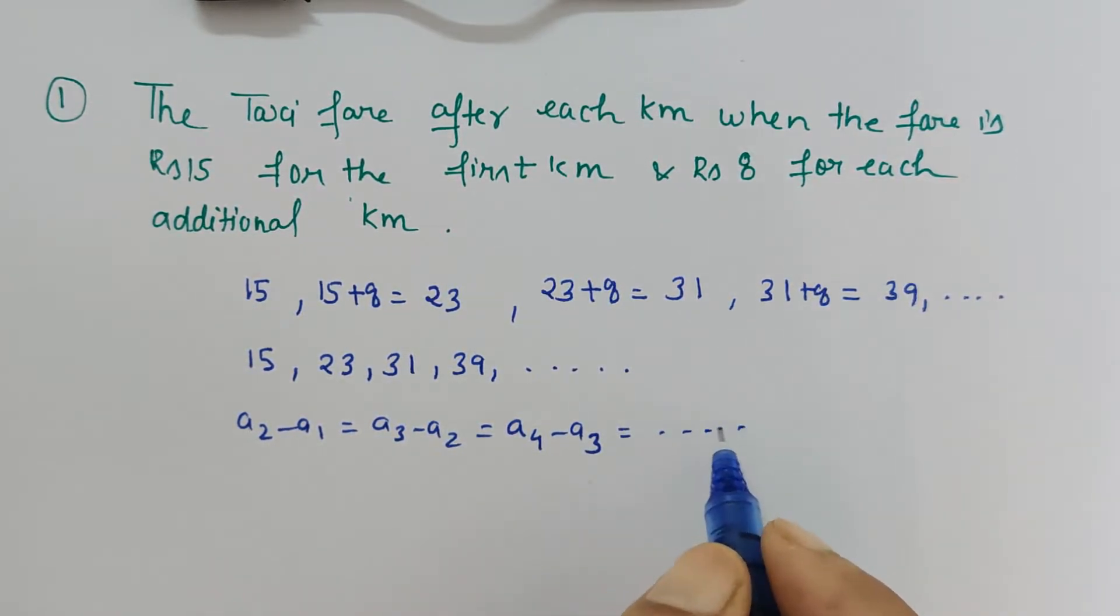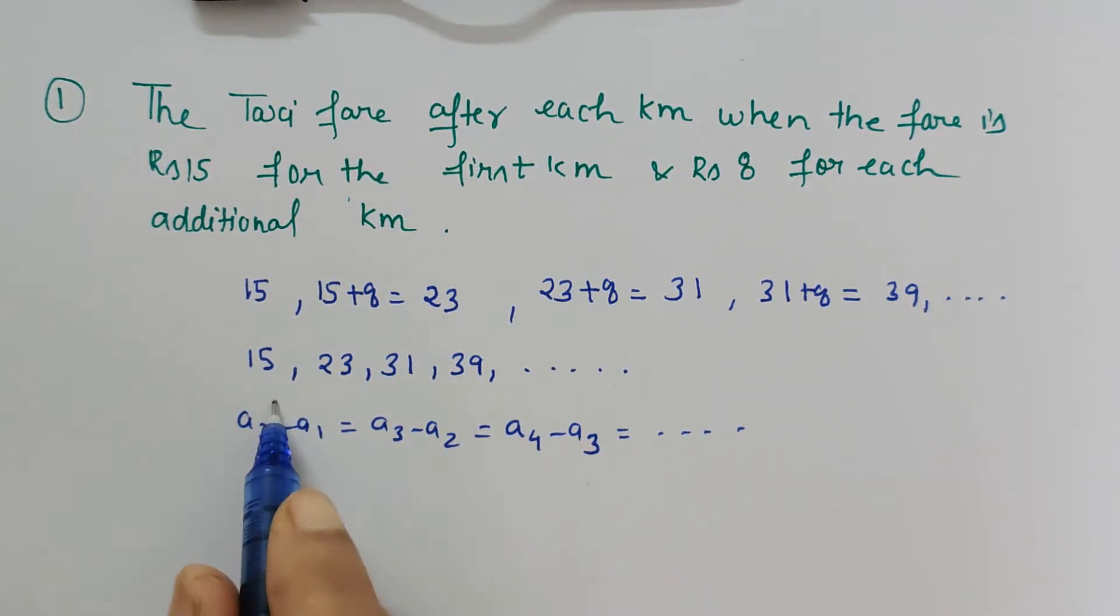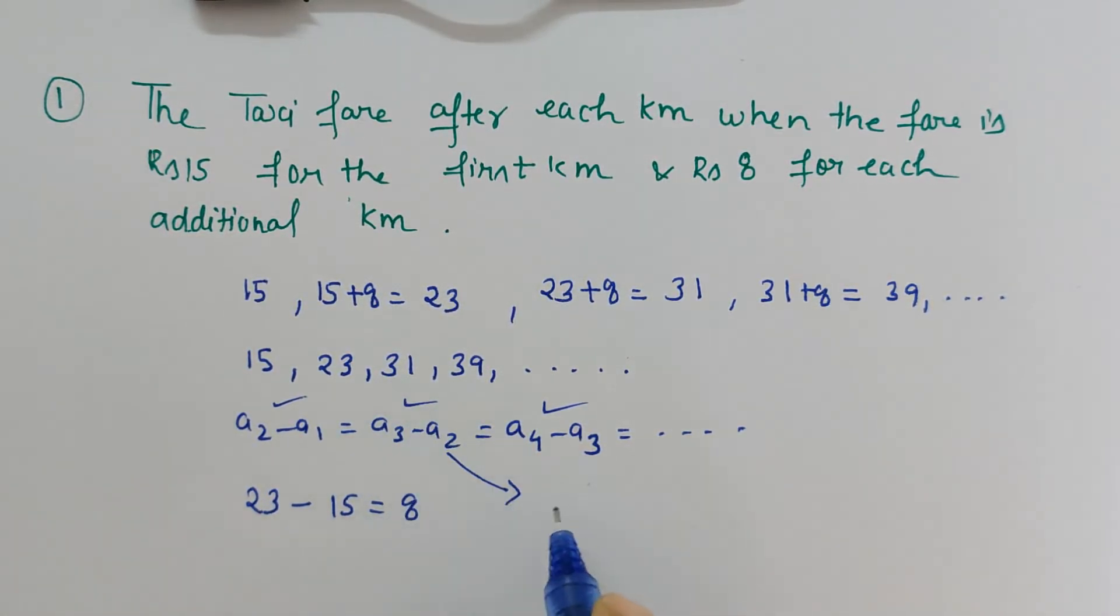No need to find the difference for all successive and preceding terms, but a few will suffice. So here, second term is 23, first term is 15, and the difference is 8. Now for this, the third term is 31, second term is 23, and the difference is 8.